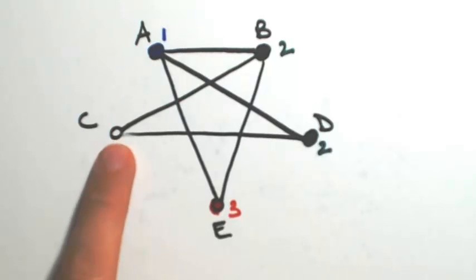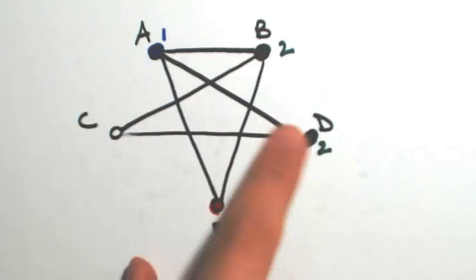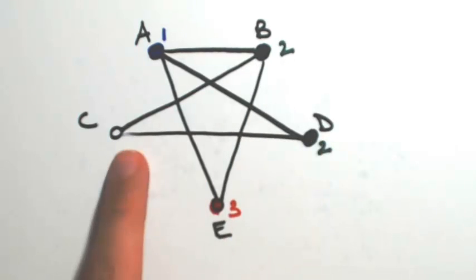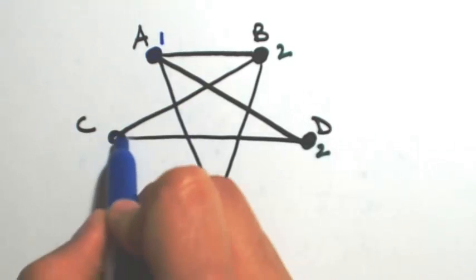So looking at C. C has a problem with B and D which are both color two. So I'm going to use one. I could have used three, but there's absolutely no reason to use four because I can use one or three. I'm going to use one.